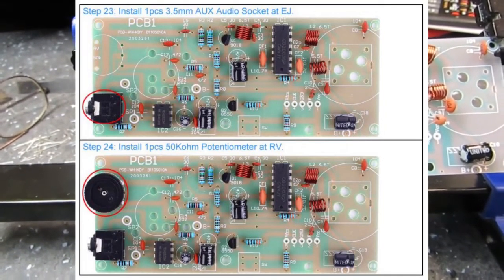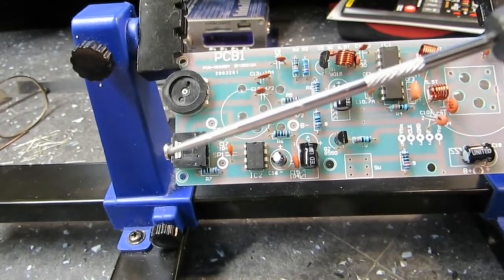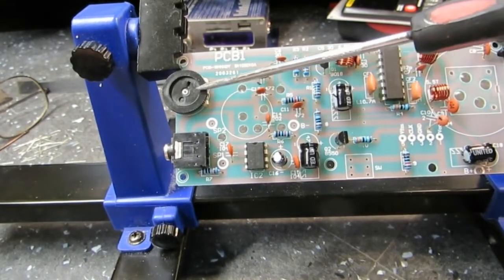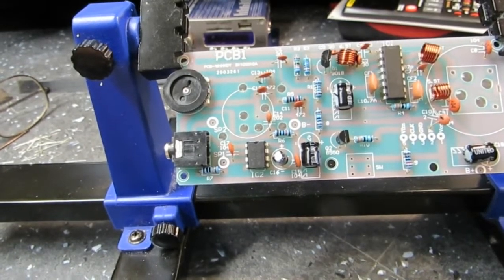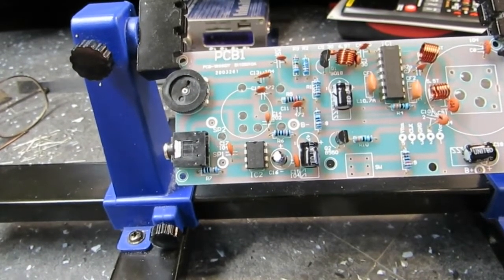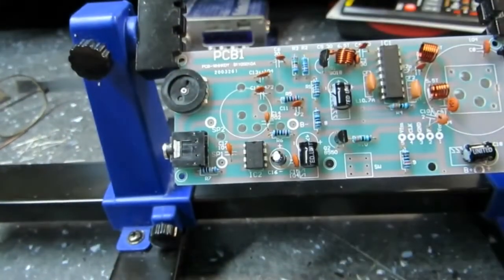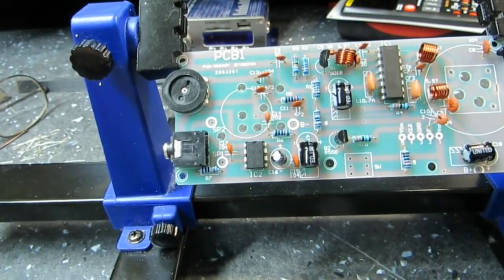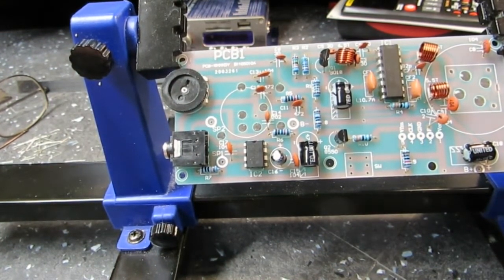So step 23 and 24 are to install the earphone, headphone, aux audio output socket here. That's been done. And this is the volume pot, 50K ohm. And that's installed at RV. And they both are soldered. And I'm not gonna show you because I'm at the end of my holding power here on this. Because of putting those in, I don't have a lip anymore to go with. Let's go on to the next step.